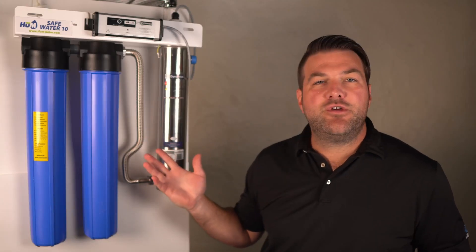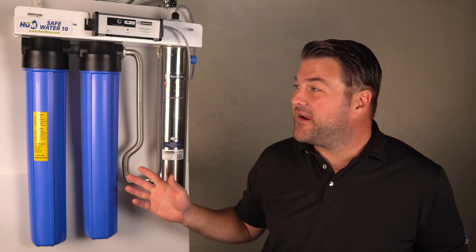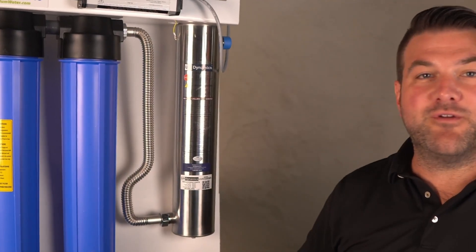For the UV light to be effective, the water must be clear and free of large particles, which is why pre-filtration is often necessary. Which is why every normal UV system, like this one, our Hume Safe Water 10 here, has a sediment filter, a carbon filter, before going through the UV system.